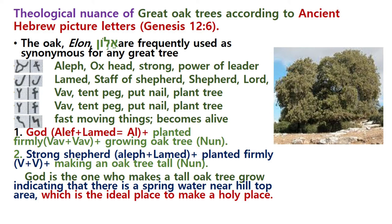Theological nuance of great Oak trees according to ancient Hebrew picture letters. Considering Genesis 12, the Oak tree in Hebrew — 'Elone' — is frequently used as synonymous for any great tree. The word 'Elone' may apply to another kind of tree if it grows tall, so 'Elone' is used as synonymous for any great tree.